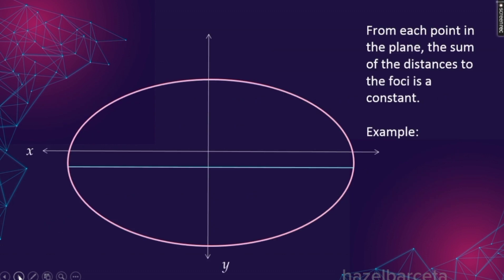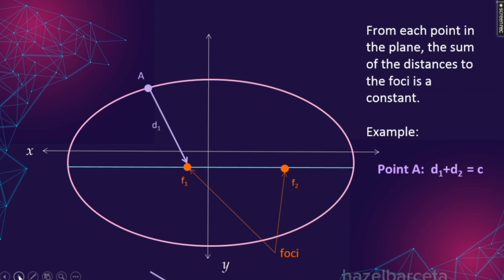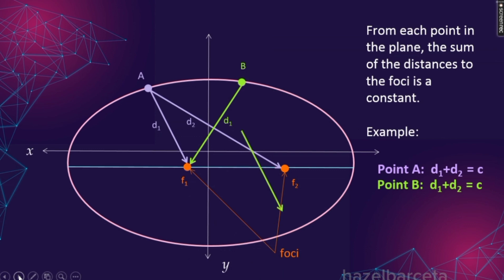From each point in the plane, the sum of the distances to the foci is a constant. So here is focus one and focus two — ang plural ng focus ay foci. We have point A, so the distance of point A to focus one is d1 and to focus two is d2. We also have point B, where its distance to focus one is d1 and to focus two is d2. Therefore, ang sum nila ay constant — so yung sa point A na d1 plus d2, at sa point B na d1 plus d2, pareho yung kanilang sum, which is a certain constant value.